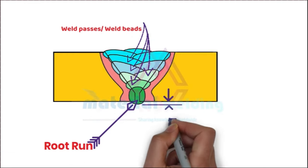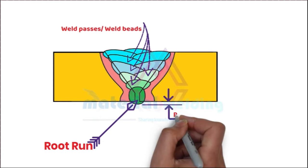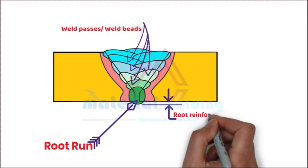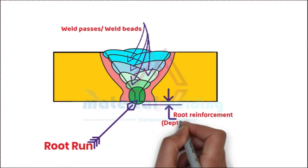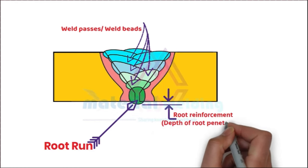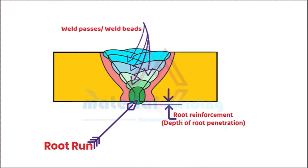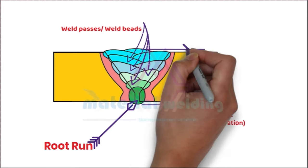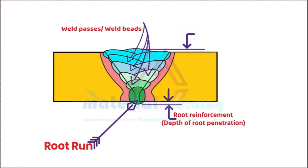Excess weld metal outside the joint on the root side is root penetration, and on the face side is called face reinforcement.